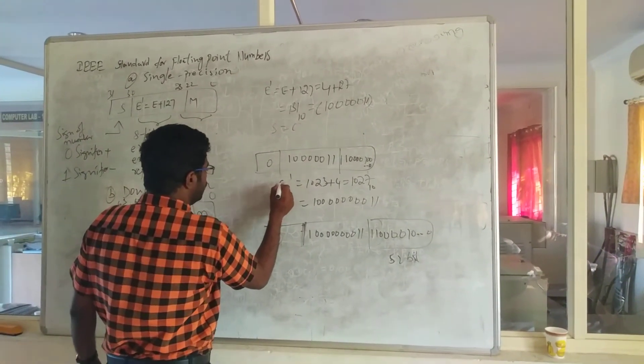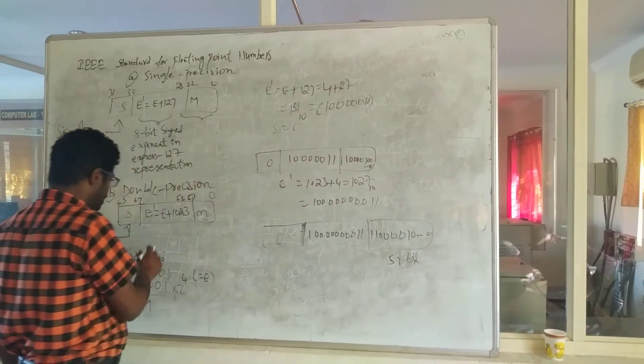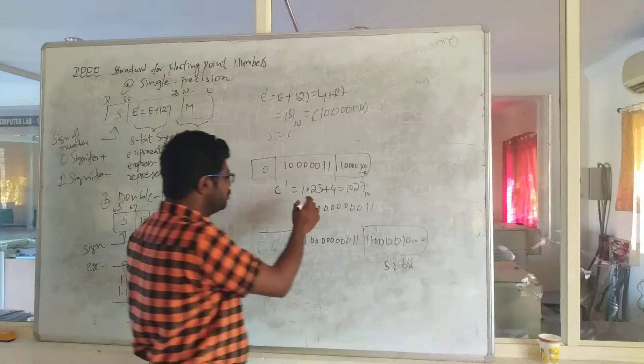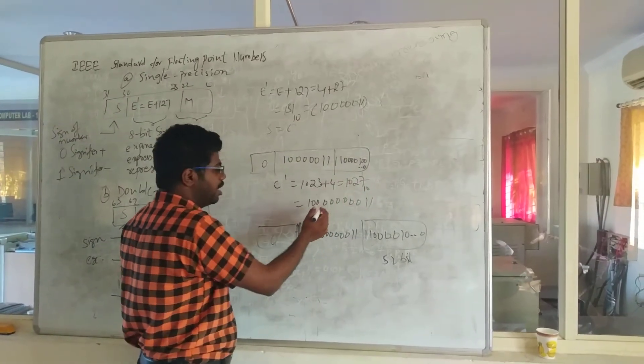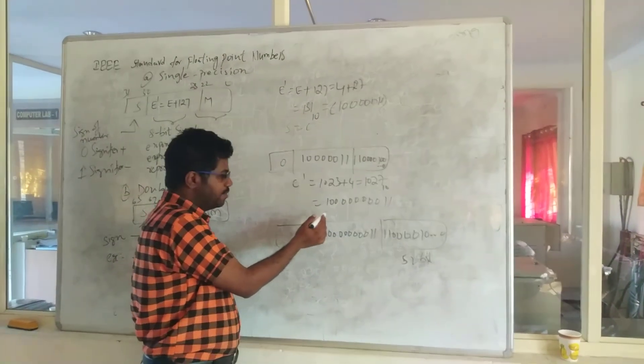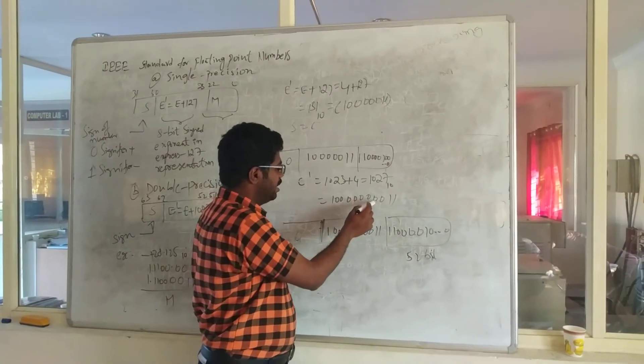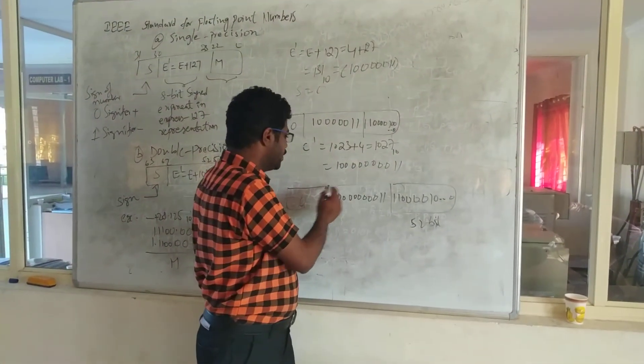The exponent structure is E plus 1023. So I am going to write 1023 plus 4, that is totally 1027. And I am going to write the direct binary value of 1027, that is 1 followed by 8 zeros and 11.